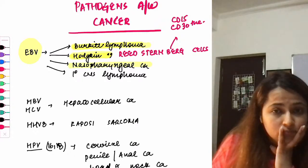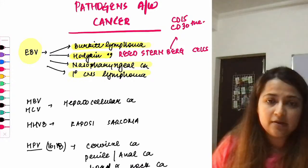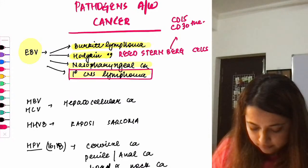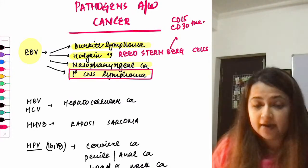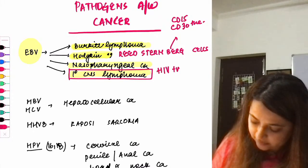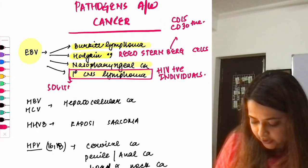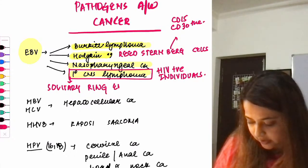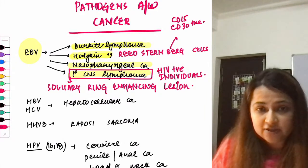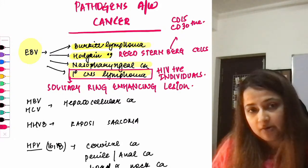EBV also causes nasopharyngeal carcinoma and primary CNS lymphoma. Primary CNS lymphoma occurs more commonly in HIV-positive individuals and appears as a solitary ring-enhancing lesion on neuroimaging in a patient with CD4 count less than 100.